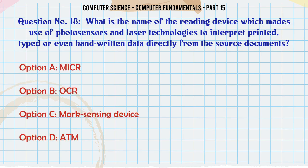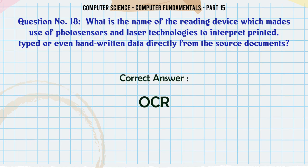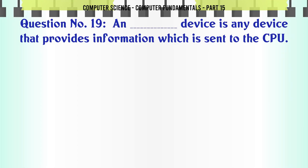What is the name of the reading device which makes use of photosensors and laser technologies to interpret printed, typed or even handwritten data directly from the source documents? A. MICR B. OCR C. Mark Sensing Device D. ATM. The correct answer is OCR.